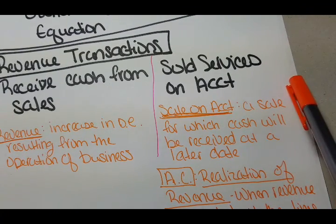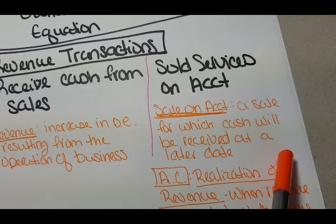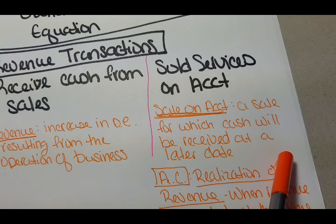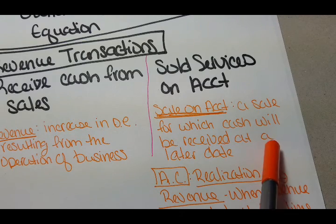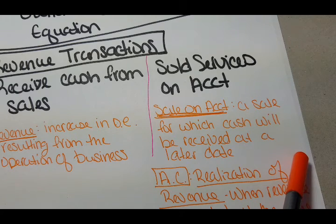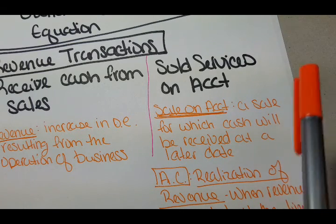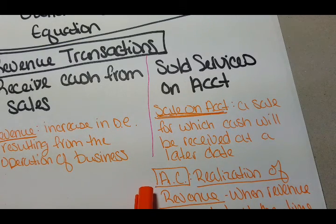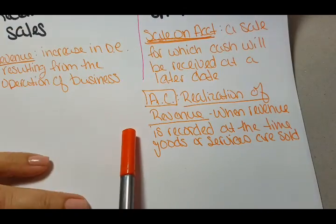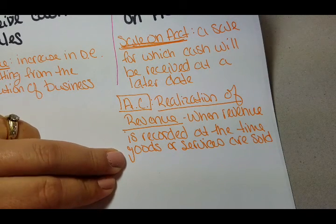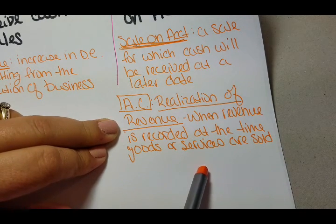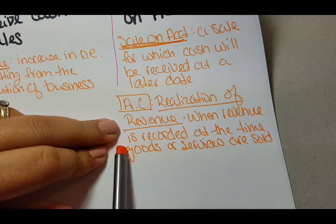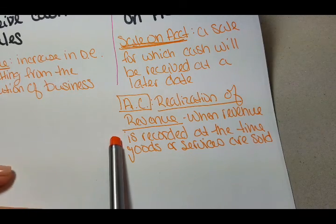The other type is whenever we sell services on account. We learned in the last section that we can buy things on account, meaning we take it now and pay for it later. We're going to allow our customers the same thing — a sale for which cash will be received at a later date. We're a computer consulting firm, so we'll consult with them, fix their computer, send them a bill at the end of the month, and then they'll pay it. The accounting concept for this is realization of revenue, which means revenue is recorded at the time goods or services are sold. You actually earn revenue when you make the sale, not when you receive the cash. That's something to know when working on taxes for a business — record the sale at the time you made the sale, not when you receive the cash.